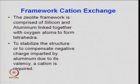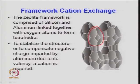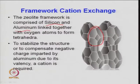The framework is comprised of silicon and aluminum linked together with oxygen atoms forming a tetrahedron, which has a 3D bucky-ball-like football structure. The 3D structure shows a 6-membered ring. Silicon and aluminum are linked with oxygen atoms, and to stabilize the structure or compensate the negative charge from aluminum, a cation is required — this is the framework which forms in zeolite.